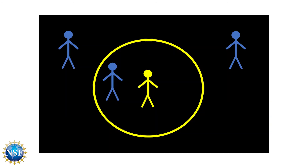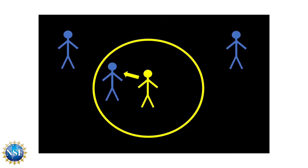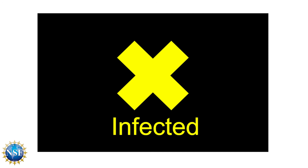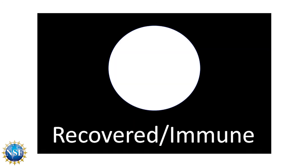In the last video, we used turtle interactions to allow turtles to infect other turtles. For the model to be realistic, turtles not only need to get infected — they also need to recover. After recovering, they will have immunity from the disease for some period of time. We are now going to write the final two sub procedures: the first will program turtles' recovery, and the second will program losing immunity.